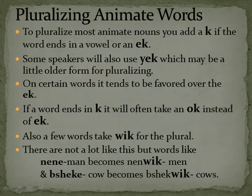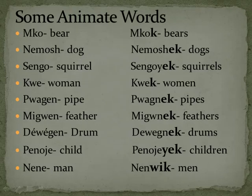There are not a lot like this, but words like Nene, man, becomes Nenwyk, men. And Bsuke, cow, becomes Bsukwyk, cows. Some animate words: Mko, bear — Mkok, bears. Nmosh, dog — Nmoshuk, dogs.